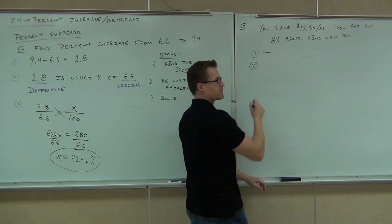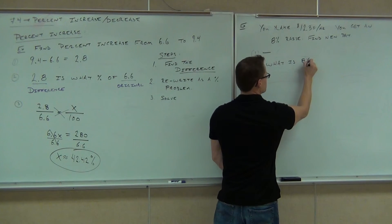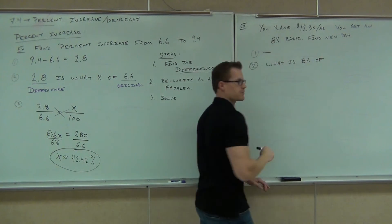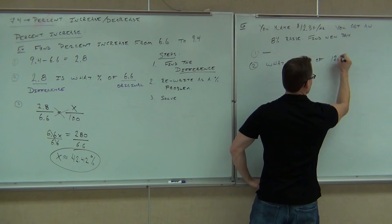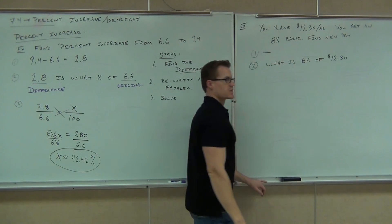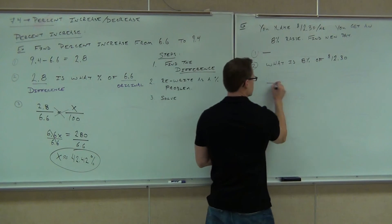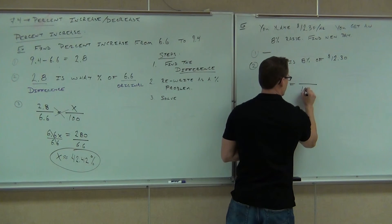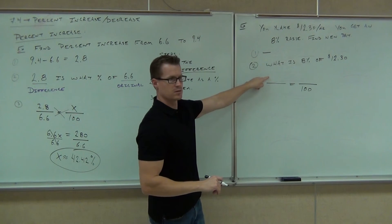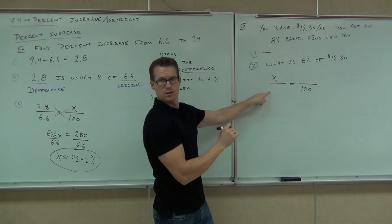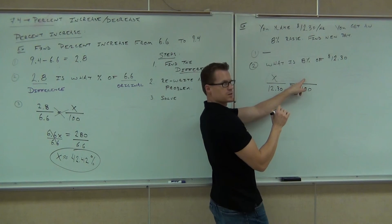Step number two, you'd ask the question, what is 8% of what did you start with? What's 8% of $12.30? Can you set up the percent equation formula with that? We're going to go quickly through this. What goes here? 100. What goes here? X. What goes here? 12.30. And what goes here? 8%. Good.